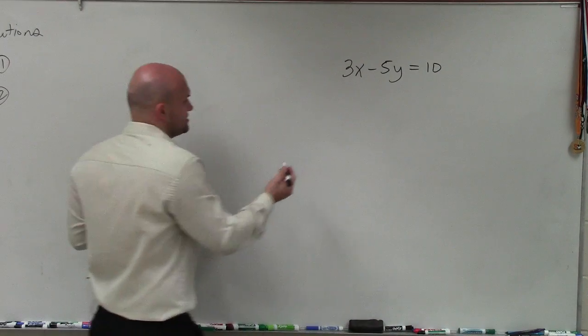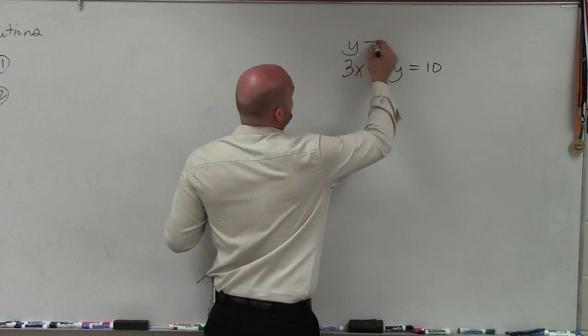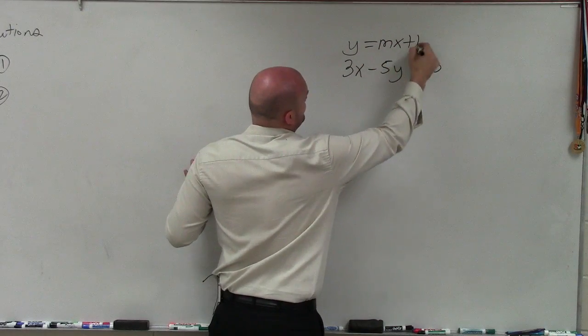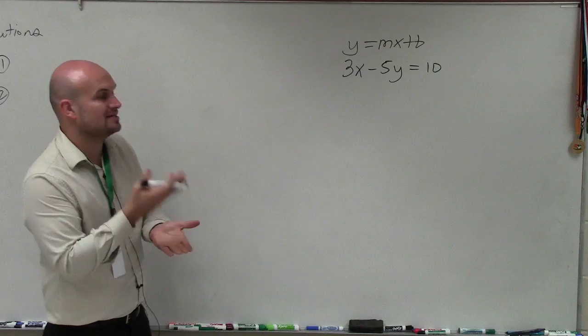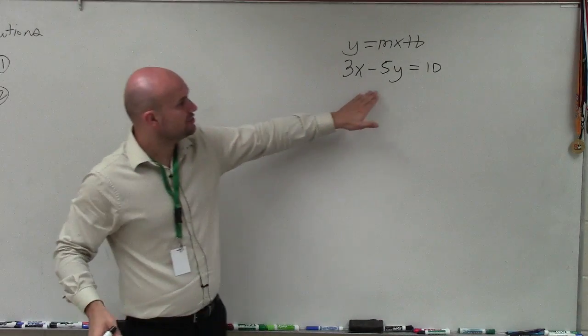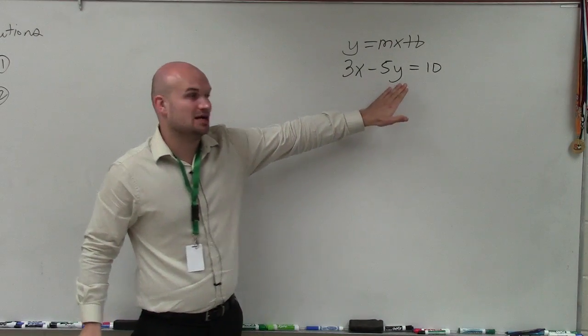To use the slope-intercept form, I need to write this equation in y equals mx plus b format. So therefore, I can identify what the slope is and identify the y-intercept. So to do that, I need to solve for y. I need to isolate my variable.